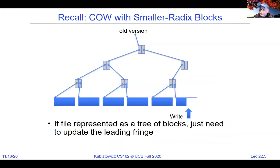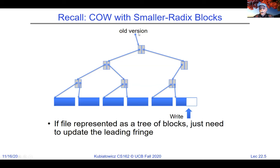We've been looking at file systems like the Fast File System and NTFS, which are overwritten when you write new data. An alternative which is a lot more reliable is copy-on-write file systems. Here's an example of a file system shown as a binary tree — think of these as the pieces of the inodes. The old version of the file has blocks down in blue in this tree. The idea behind a copy-on-write system is that if you want to write some new data or overwrite something, you don't actually overwrite the original data.